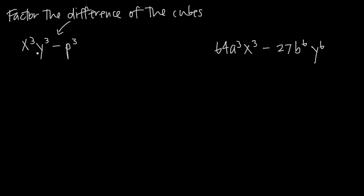Sometimes we want to be able to factor the difference of cubes. Whenever we do that, we're going to follow a pattern or process — it works every single time as long as we follow the rules. The first part of our pattern: we want to take the cube root of each of these terms. So the cube root of x cubed is x, the cube root of y cubed is y. We always have a minus sign here as part of our pattern, and then the cube root of p cubed is p. This is the binomial term that we're going to factor out of the difference of our cubes.